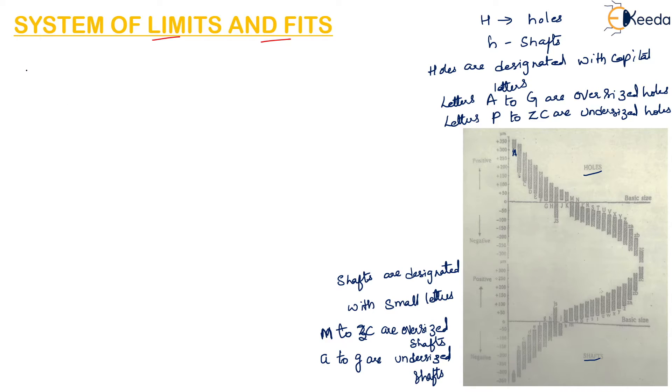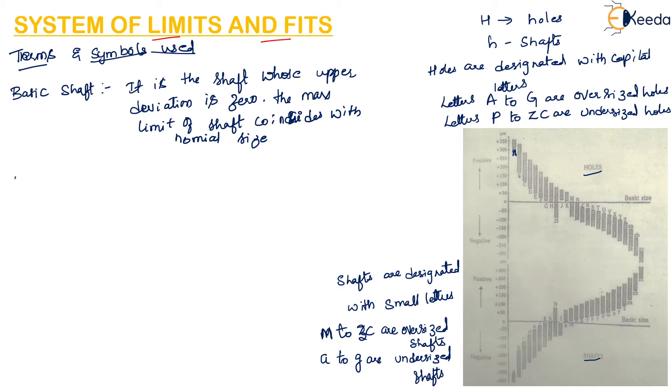The terms and symbols basically used in this system: basic shaft is a shaft whose upper deviation is zero. The maximum limit of shaft coincides with the nominal size or the zero line. Basic hole is a hole whose lowest deviation is zero, that is the minimum limit of the hole coincides with the normal size or the zero line.